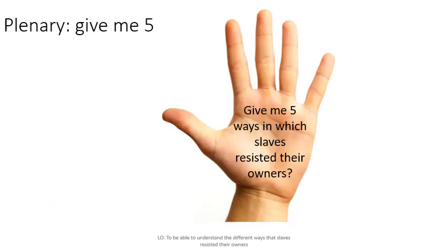For the final plenary: give five ways in which slaves resisted their owners. Close your books and try to recall five of them from memory. We have no more lessons this week, so our next lesson is next Thursday and I should be back in school for that. This should be your final narrated lesson.